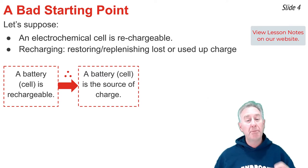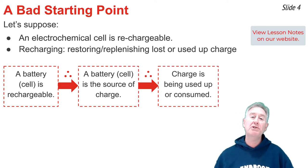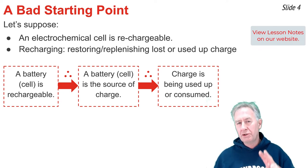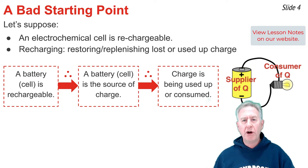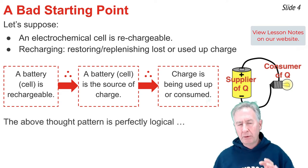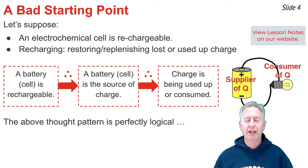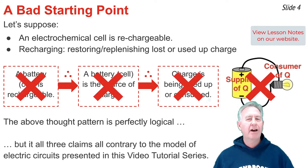If we start with the idea that a battery or a cell is rechargeable, then, therefore, that means that a battery or cell must be the source of charge. When it doesn't work, it's out of charge, and what we must do is replenish the amount of charge it has. It also leads to the claim that a charge is being used up or consumed by the devices that are in that circuit. Why else would you have to replenish it if it wasn't getting used up or consumed? The picture of a circuit that these two suppositions present is a picture in which the cell or battery is the supplier of charge, and the light bulb or whatever is being used in the circuit is the remover or consumer of the charge. Now, this is a perfectly logical train of thought. I don't disagree with the logic. What I do disagree with is each one of these statements. All of these claims are totally false, and contrary to what is being taught, probably by your physics teacher, and certainly by the video tutorial series that you're listening to.